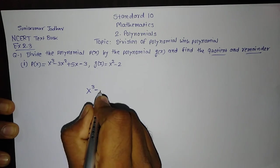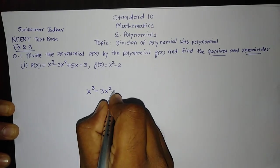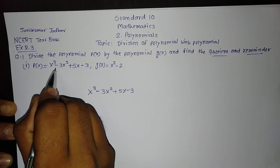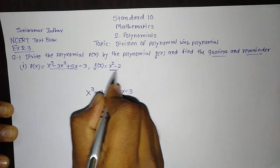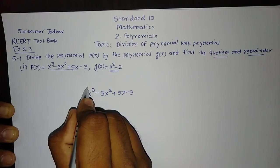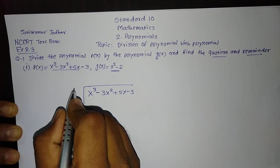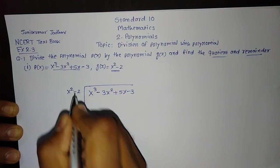The Polynomial P(x) is x³-3x²+5x-3 and G(x) is equal to x²-2. So x³-3x²+5x-3, this polynomial we have to divide by x²-2. This is division.